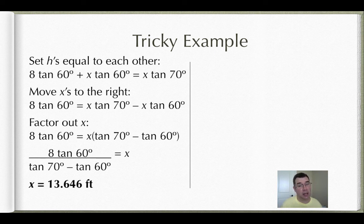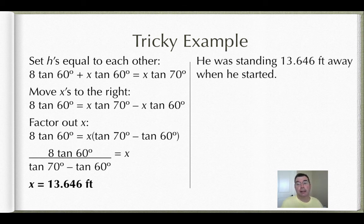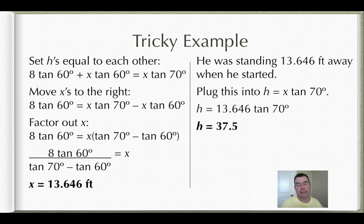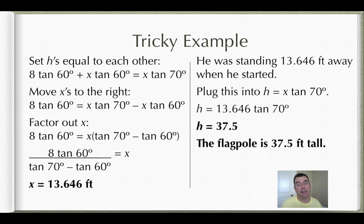That was not the height of the flagpole. So how do I get to the height of the flagpole? Now that I know how far away he was standing, that's my x. I can plug it into either one of those equations that says h equals something, now that I know what x is. So I'm going to pick the easiest one that says that h is equal to x times the tangent of 70. So that's going to be 13.646 times the tangent of 70, which is going to be 37.5 feet. So that means the flagpole is 37.5 feet tall.